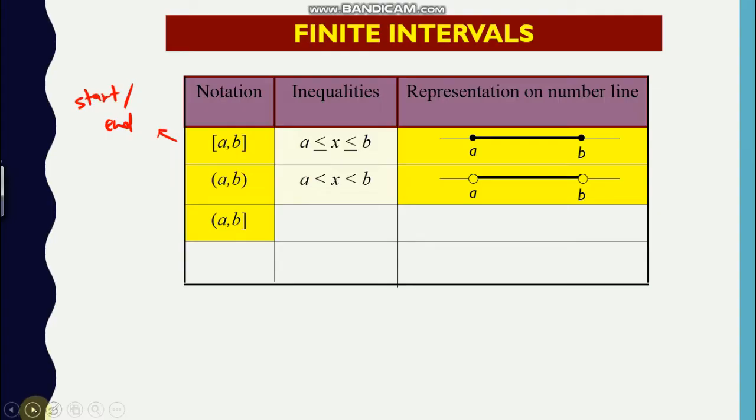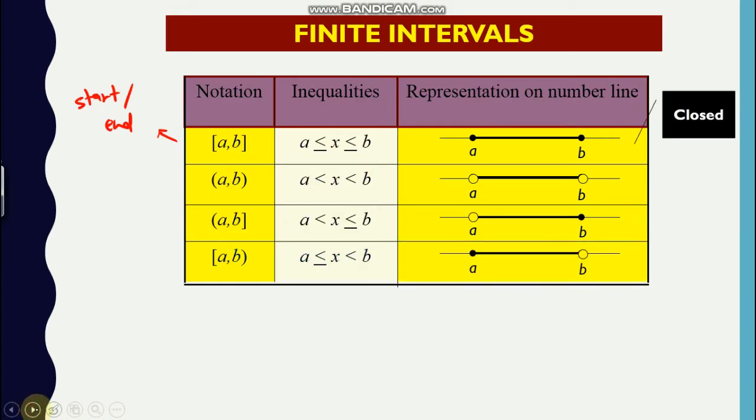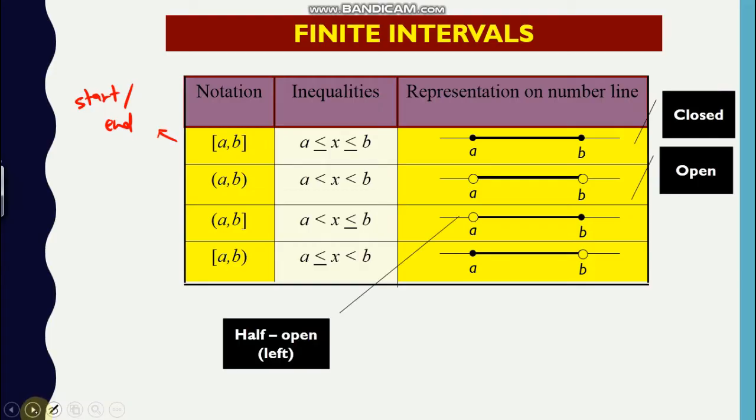And then accordingly, if you have one open and one closed respectively, it will be represented by empty circle and a full dot circle. So note that this one is a closed interval, that one is open interval, but both of these two intervals are half open, which is that one is left and another one is right.